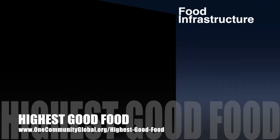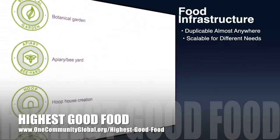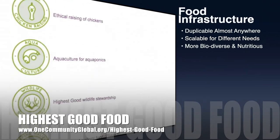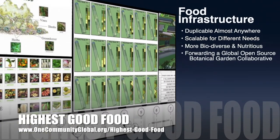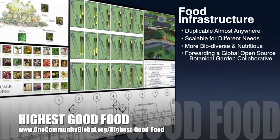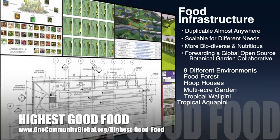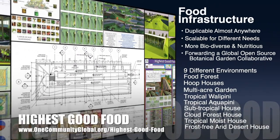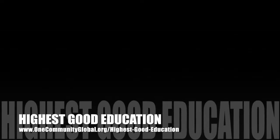One Community's approach to highest good food is duplicable almost anywhere, scalable for different needs, more biodiverse and nutritious, part of forwarding a global open source botanical garden collaborative, and includes nine different free shared and duplicable growing environments.